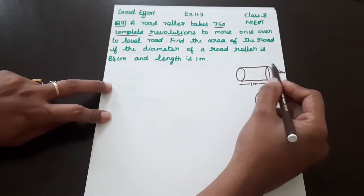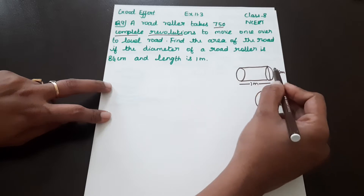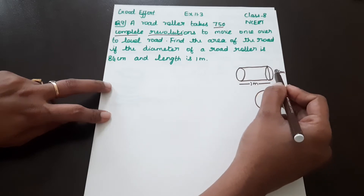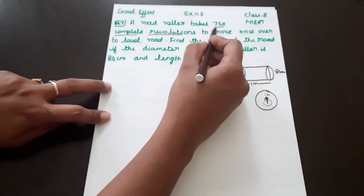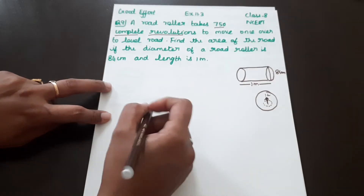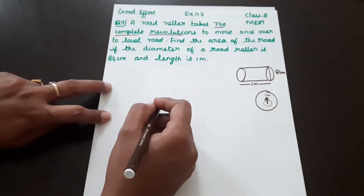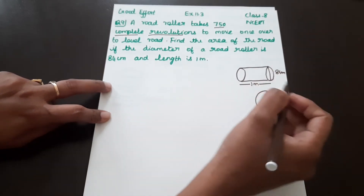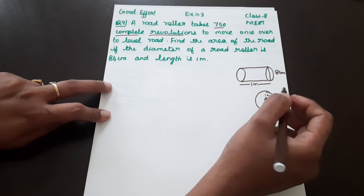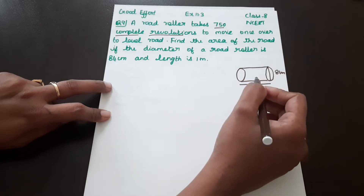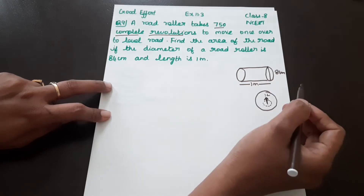If we consider one revolution, we will multiply to get the total area. For one revolution, we calculate the lateral surface area of the cylinder — that is the area we will use.